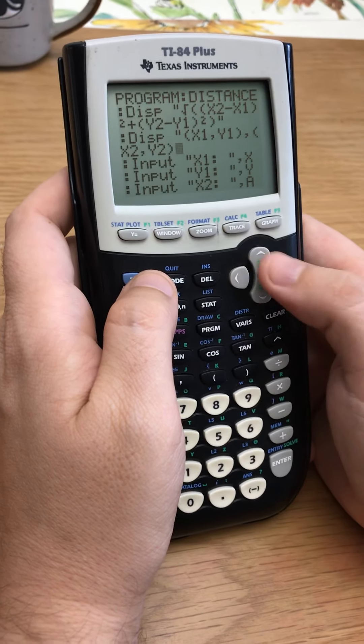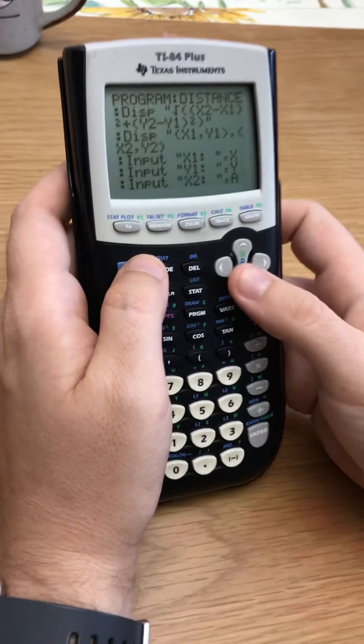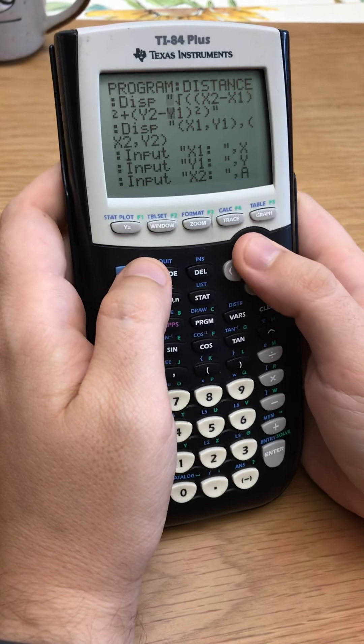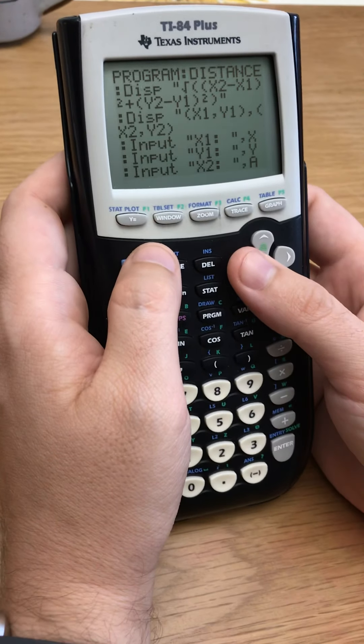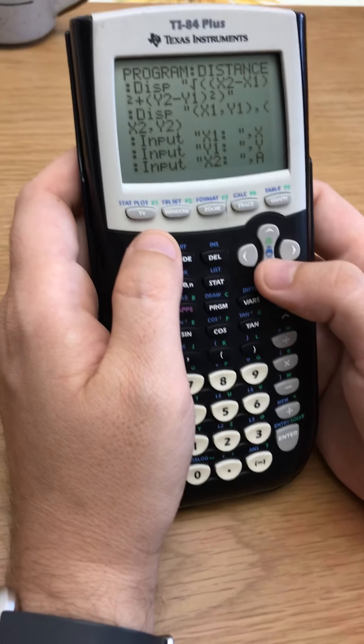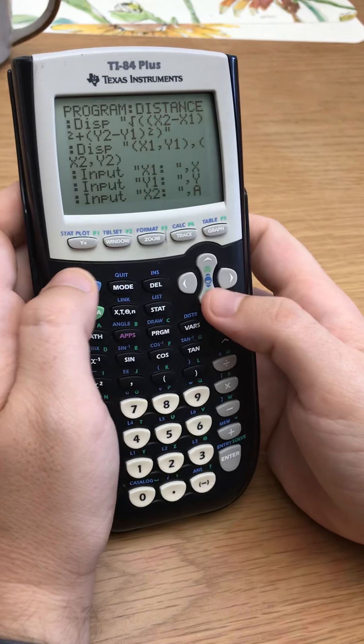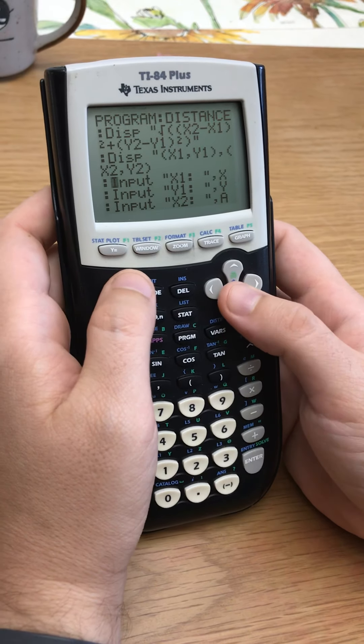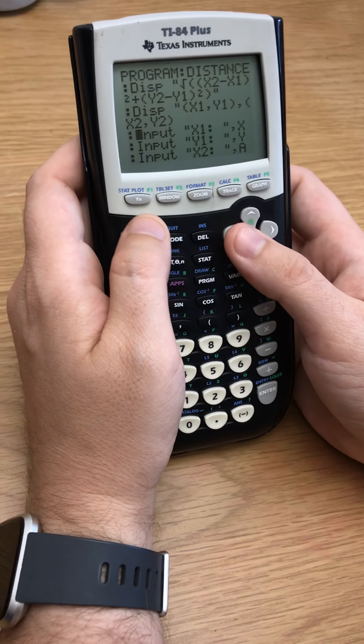And then here I've got inputs. So there are four things, four things you need to make a program. And they're not super needed, but it's what I would recommend to make a good program. So display, number one. Number two, you need your inputs. Now if you want to be basic, not basic in a bad way, but just don't do anything fancy.